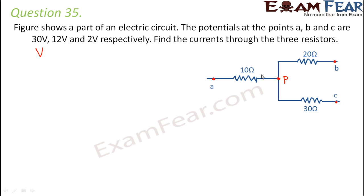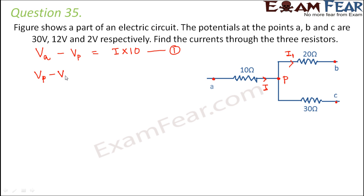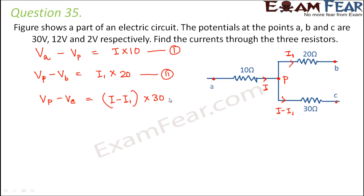The potential difference between two points equals I times R. Let current I flow through the 10 ohm resistor, so Va minus Vp equals I into 10 ohms — this is equation one. The potential difference between P and B gives Vp minus Vb equals I1 into 20 ohms — equation two. Finally, Vp minus Vc equals (I minus I1) into 30 ohms — equation three.